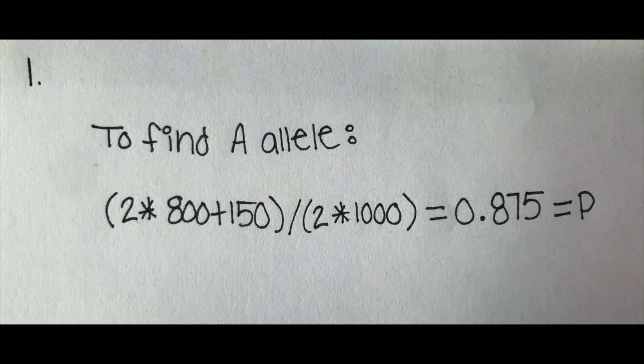First, we need to find p, which represents the frequency of the dominant A allele in the Snail-topia population. To do this, we do 2 times 800, which is homozygous dominant, plus 150, which is the heterozygous, divided by 2 times 1,000, which is the total. That gives us 0.875.